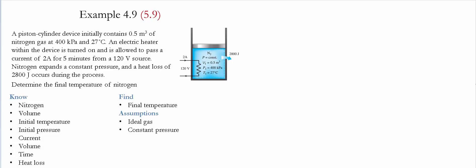Example 4.9 or 5.9 for the given textbooks. For details, please see the description below. A piston-cylinder device initially contains 0.5 cubic meters of nitrogen gas at 400 kilopascals and 27 degrees Celsius.